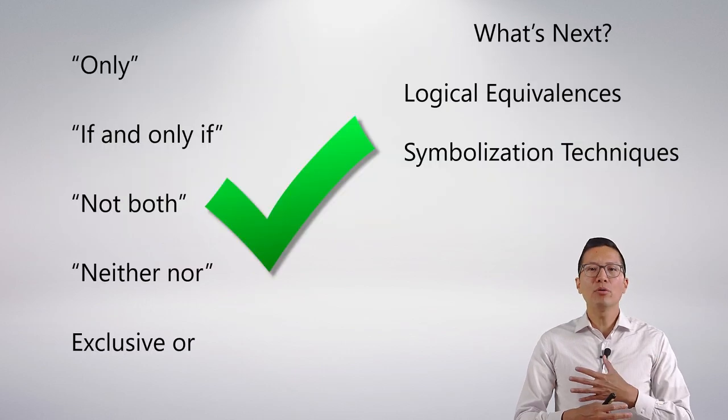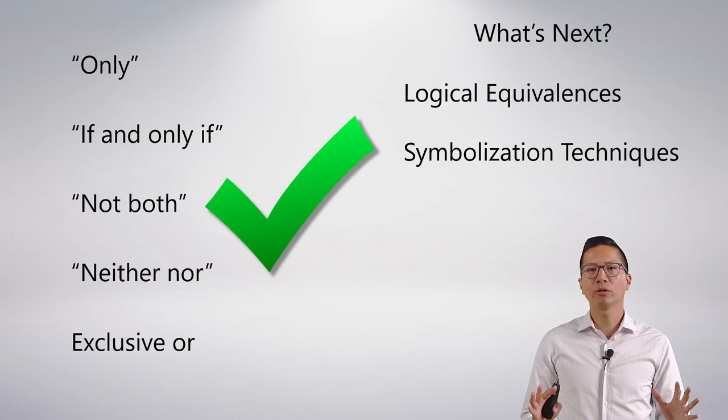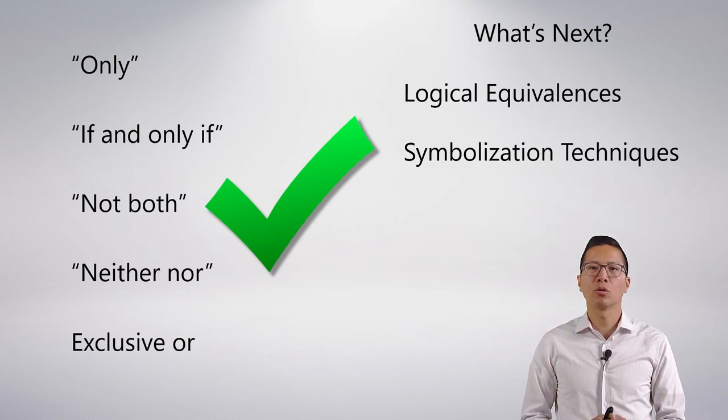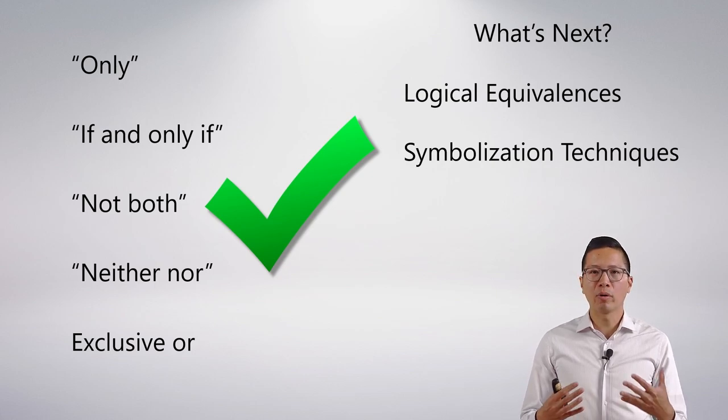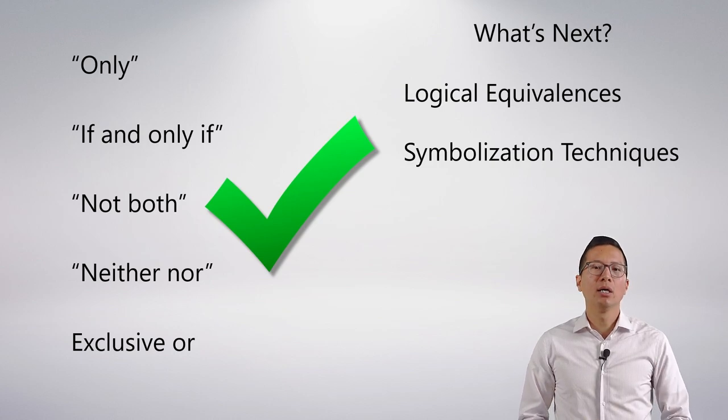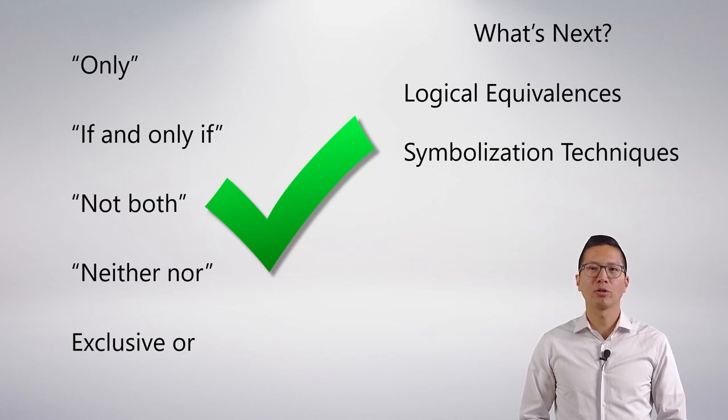So we went through these important phrases, but by far the most difficult and the important one that you need to master in this course is the word only. So take some time with the practice questions and really work on that. Coming up next, we're going to look at logical equivalences, which is something that we've actually been experimenting with a lot. I just haven't really named them that yet. And I'm just going to go over some of the symbolization techniques that we've already been using and just lay them out for you to help you do some of the more complicated questions.